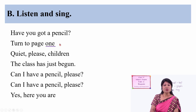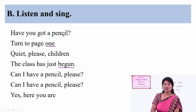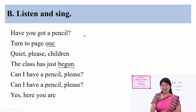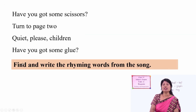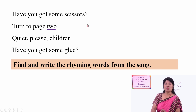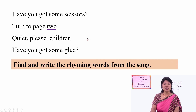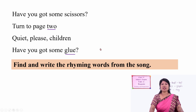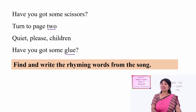In the next stanza, which word rhymes with another? 'Two' — two rhymes with which word? Not 'children.' 'Glue' — two and glue. When we pronounce these words, they sound similar: two, glue. That's why these are the rhyming words we can find in this song.